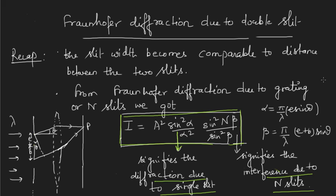Now I would like to take a special case of diffraction due to double slit. I am calling this a special case because I can derive the intensity pattern for double slit directly from this formula — by substituting n = 2, I will get double slits. Let me see how the intensity pattern looks when I take double slits.